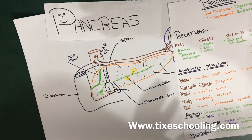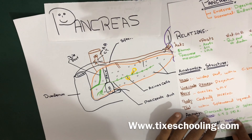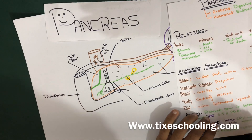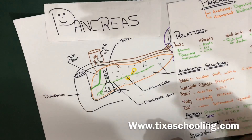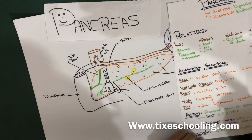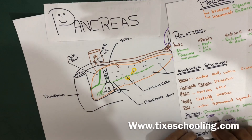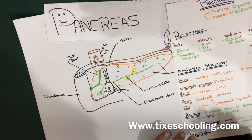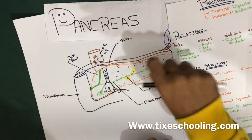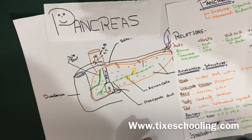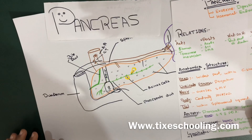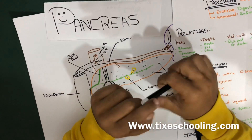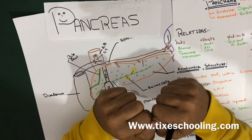For venous drainage, the head of the pancreas drains into the superior mesenteric branches of the hepatic portal vein. The pancreatic veins draining the rest of the pancreas do so via the splenic vein. For lymphatics, the lymph of the pancreas drains into the pancreatic splenic nodes. Please watch our other videos and visit our website at www.tykeschooling.com — thank you.